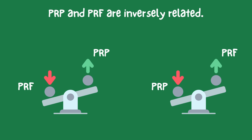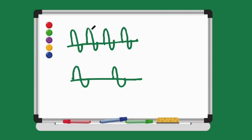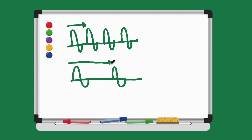Let's break this down. Imagine both scenarios represent the number of pulses transmitted in one second. The PRP is the time from the beginning of one pulse to the beginning of the next. When the ultrasound system is emitting more pulses per second, there is a shorter period of time between each pulse — therefore the PRP is shorter because the system is transmitting pulses more frequently. In contrast, when the PRF is lower, the system is emitting fewer pulses per second, resulting in a longer PRP because the system is transmitting pulses less frequently.